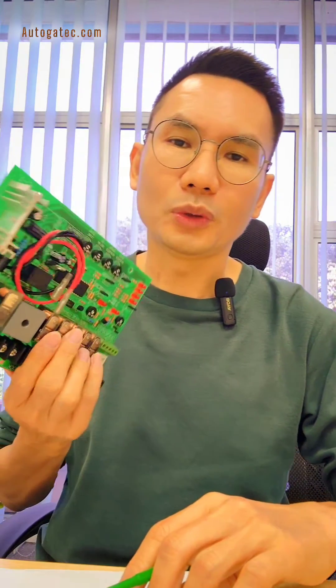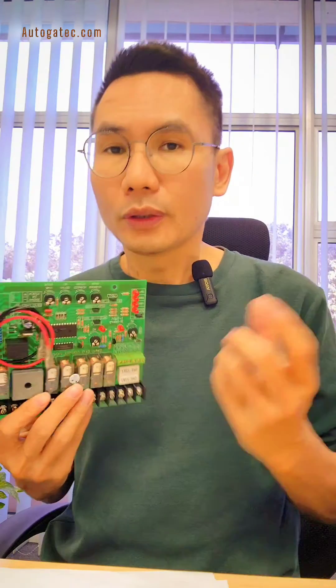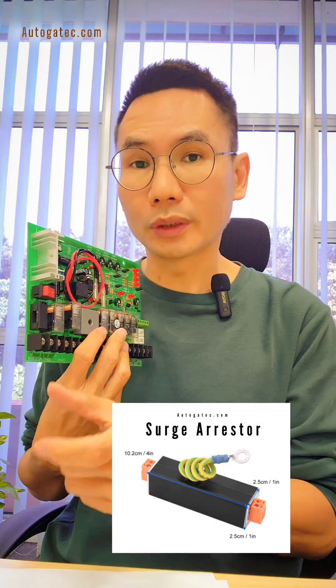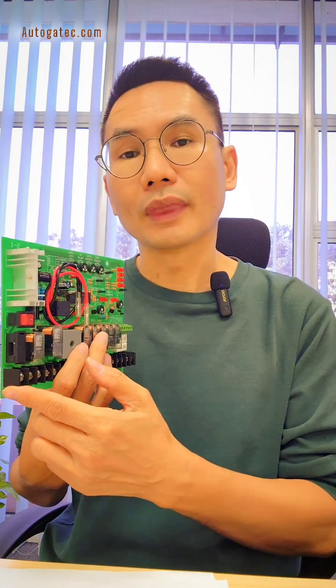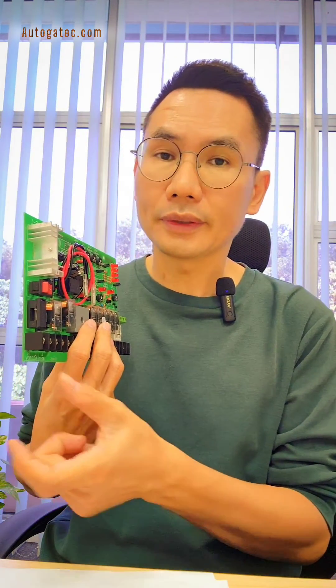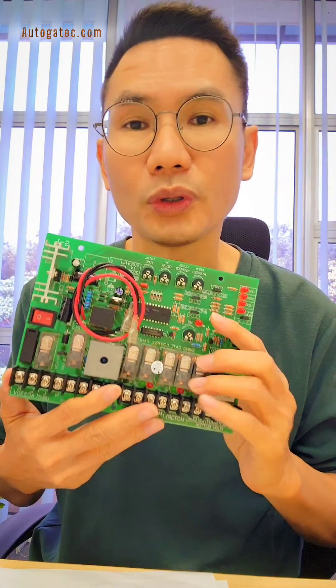And if you say I'm still using the old type like this, how to prevent the lightning strike? Yes, you can. You need to add on lightning arrestor. The current will go into the arrestor, then the arrestor will protect the motherboard. When it's lightning very strong, you burn the arrestor. So your board, you can prevent it from getting spoiled or damaged.